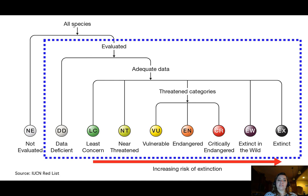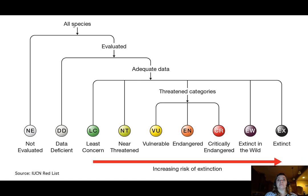Either we don't have enough data to put a species in a category, or we do. Those data include things like population size, how many mature individuals exist that could have offspring, how large its geographic range is, whether its range is shrinking, expanding, or remaining stable, and other threats potentially exposing the species to dangers of extinction. Once you have adequate data, the species gets listed in one of the Red List categories, from least concern to extinct, with increasing risk as you move up that ladder.